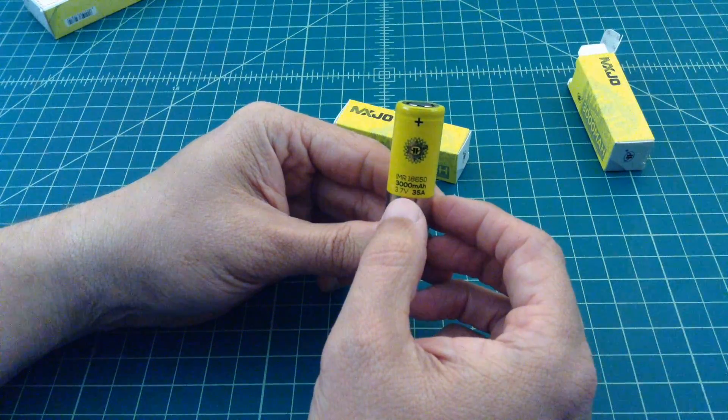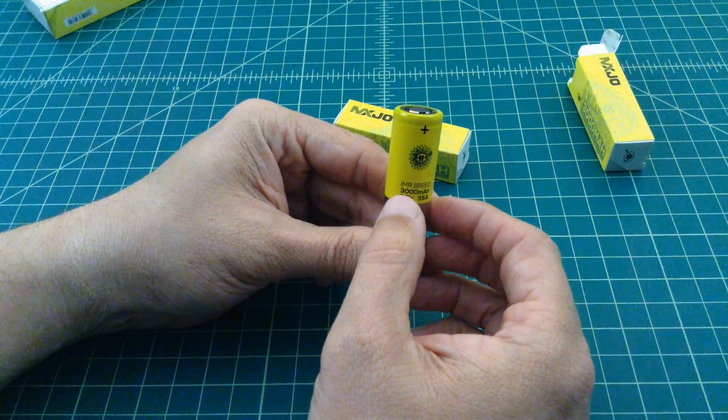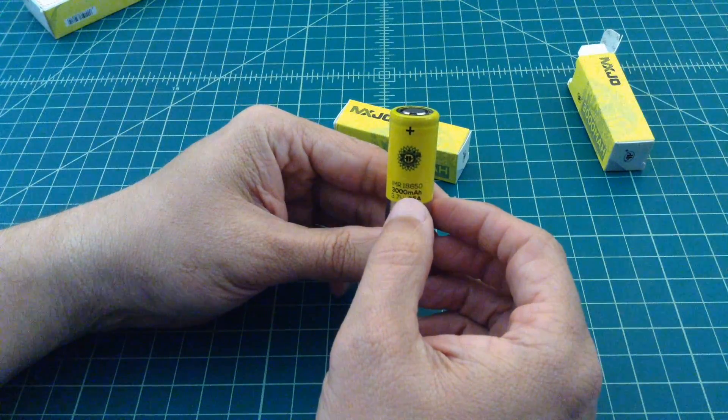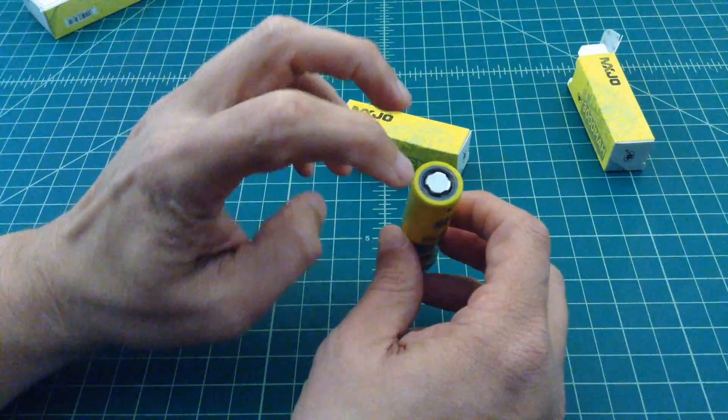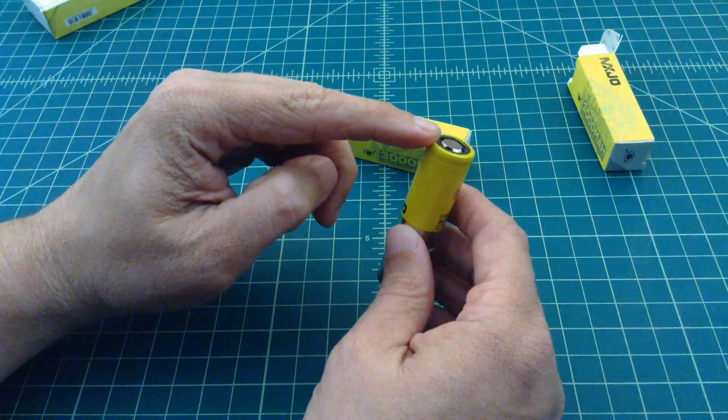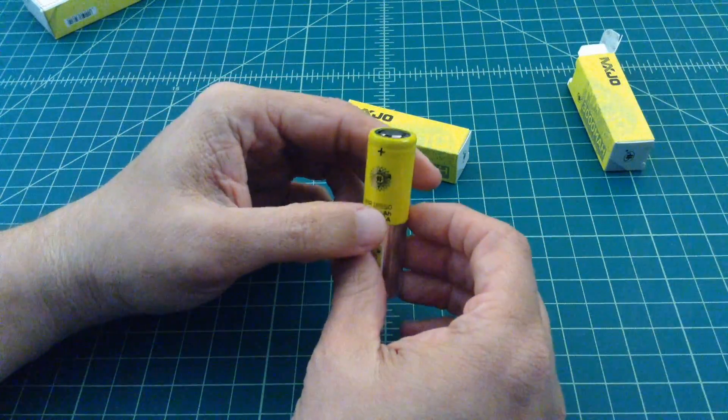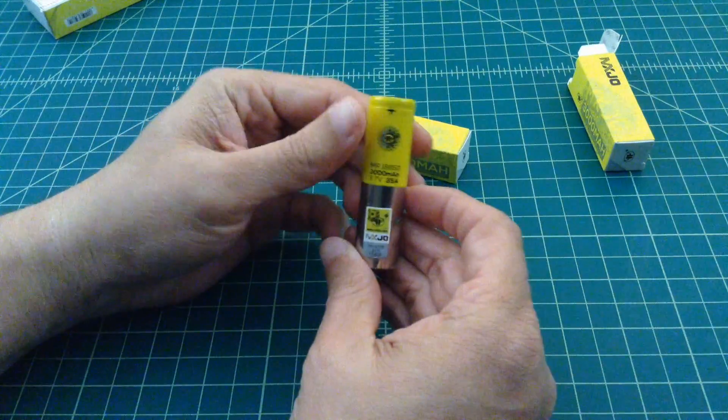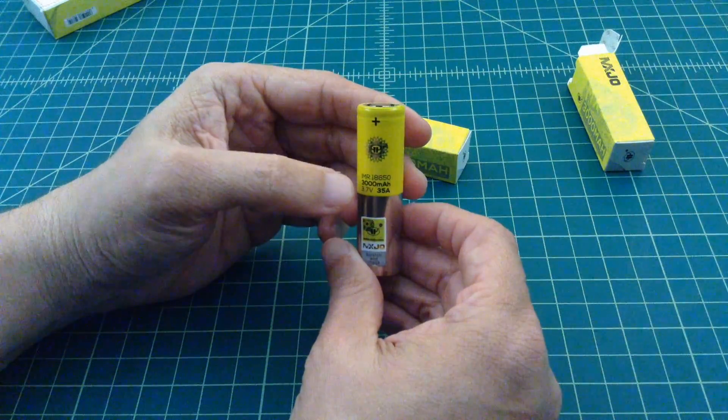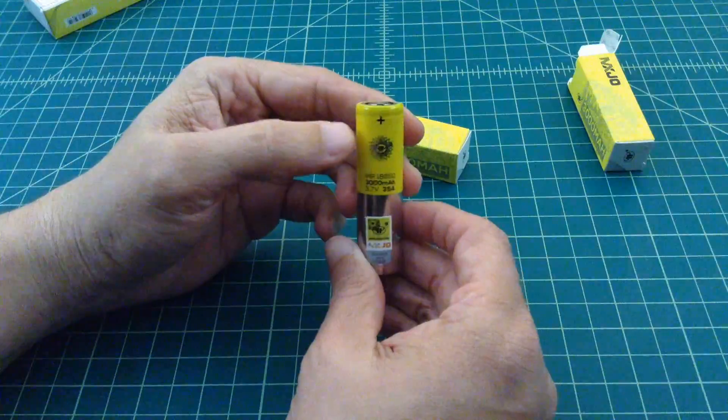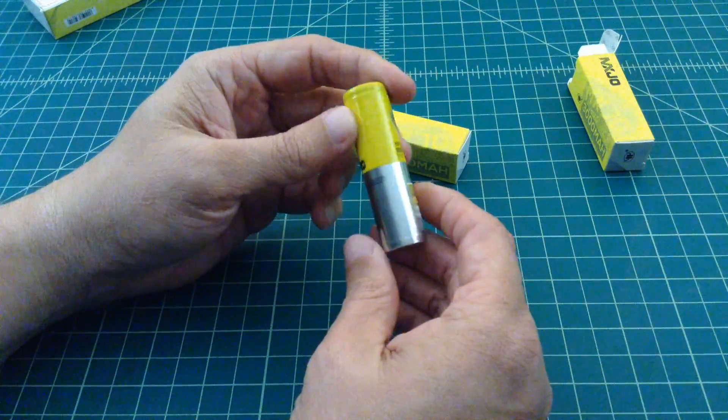So these are IMR, which is actually the I stands for Lithium Manganese Rechargeable Battery. 18650, 18 millimeters across, 65 millimeters tall. And the O means that it's round. So you want to make sure that the font and the packaging of the battery match up.